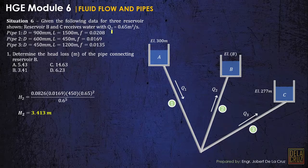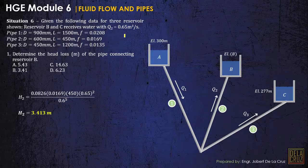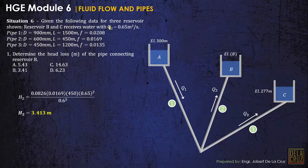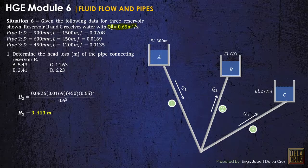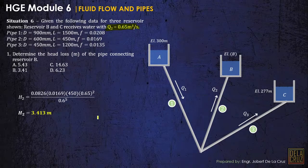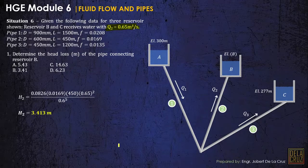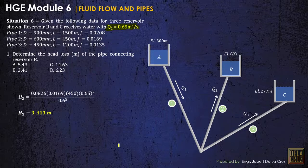So the first solution here is to calculate the head loss. Denote it as H sub 2, head loss at pipe 2, because the given discharge is for pipe 2. So we can solve this head loss for pipe 2 and that is 3.413 meters.